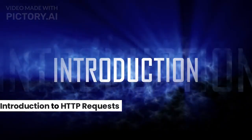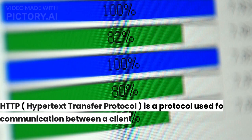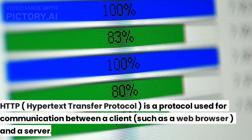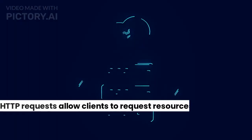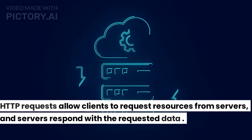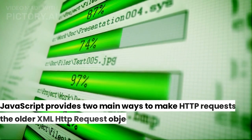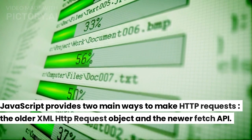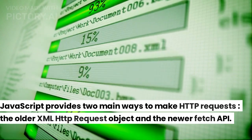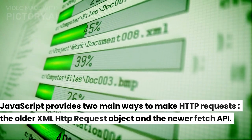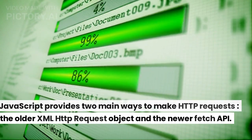Introduction to HTTP Requests. HTTP, Hypertext Transfer Protocol, is a protocol used for communication between a client, such as a web browser, and a server. HTTP requests allow clients to request resources from servers, and servers respond with the requested data. JavaScript provides two main ways to make HTTP requests: the older XMLHttpRequest object and the newer Fetch API.